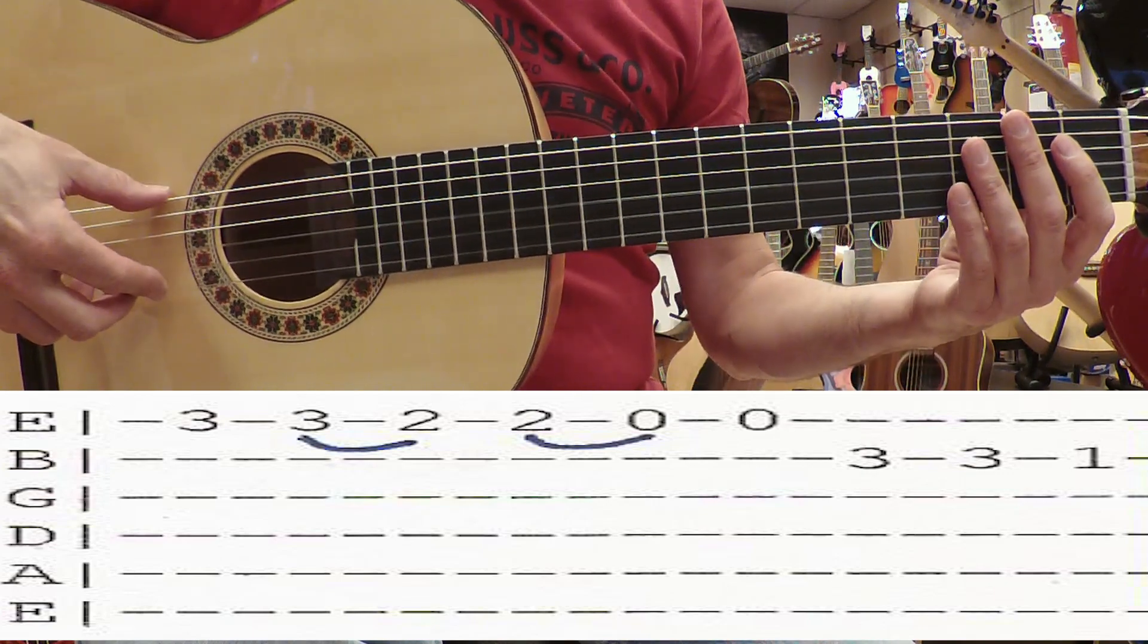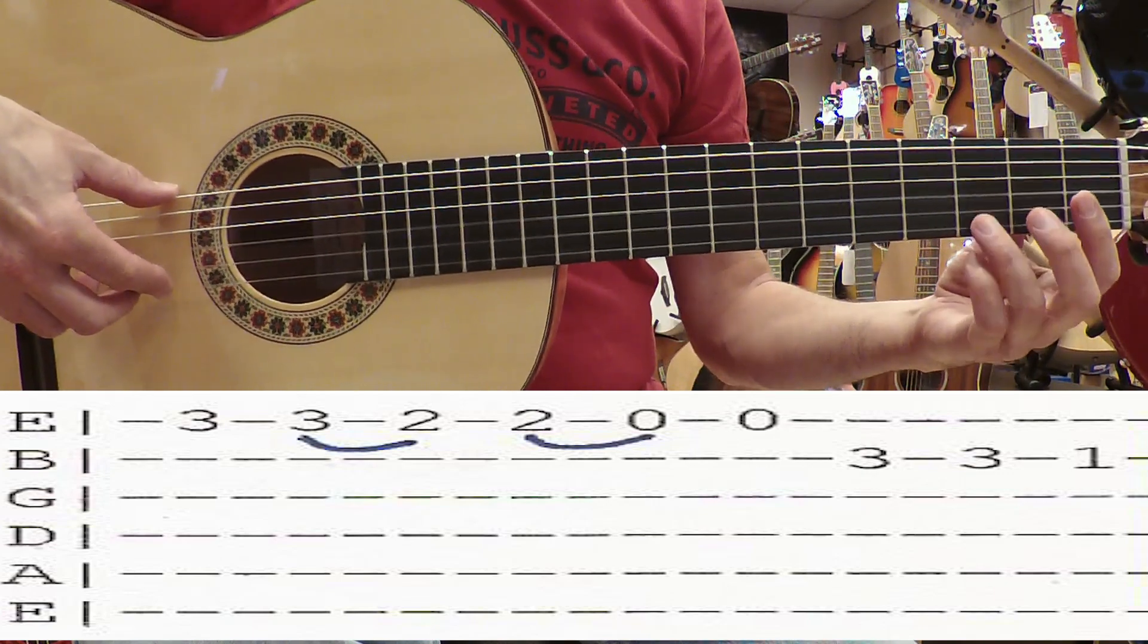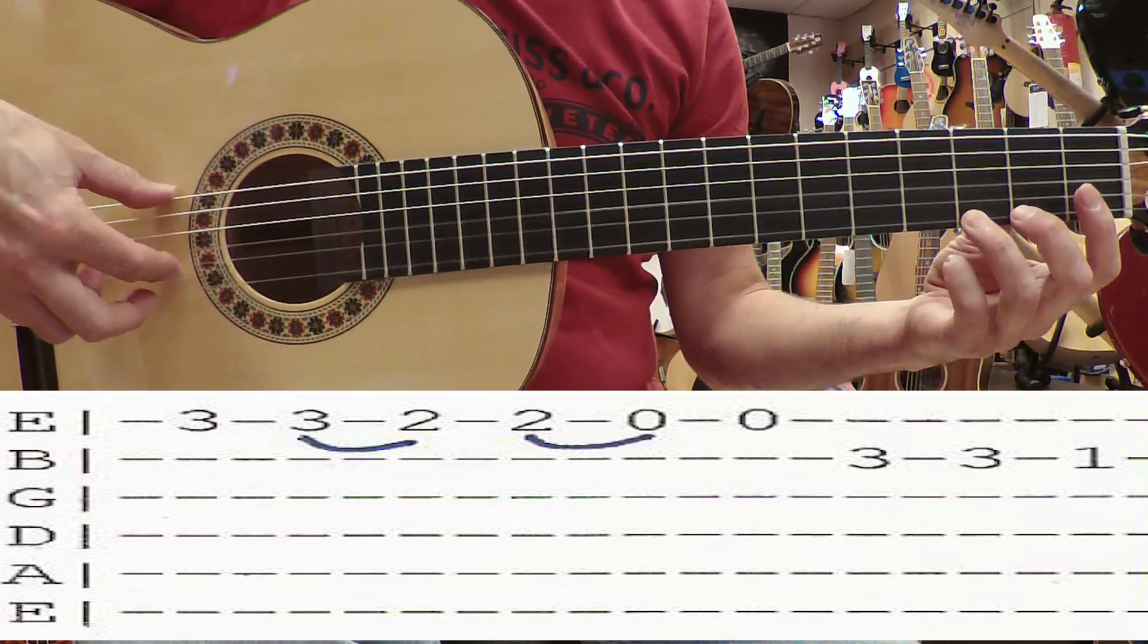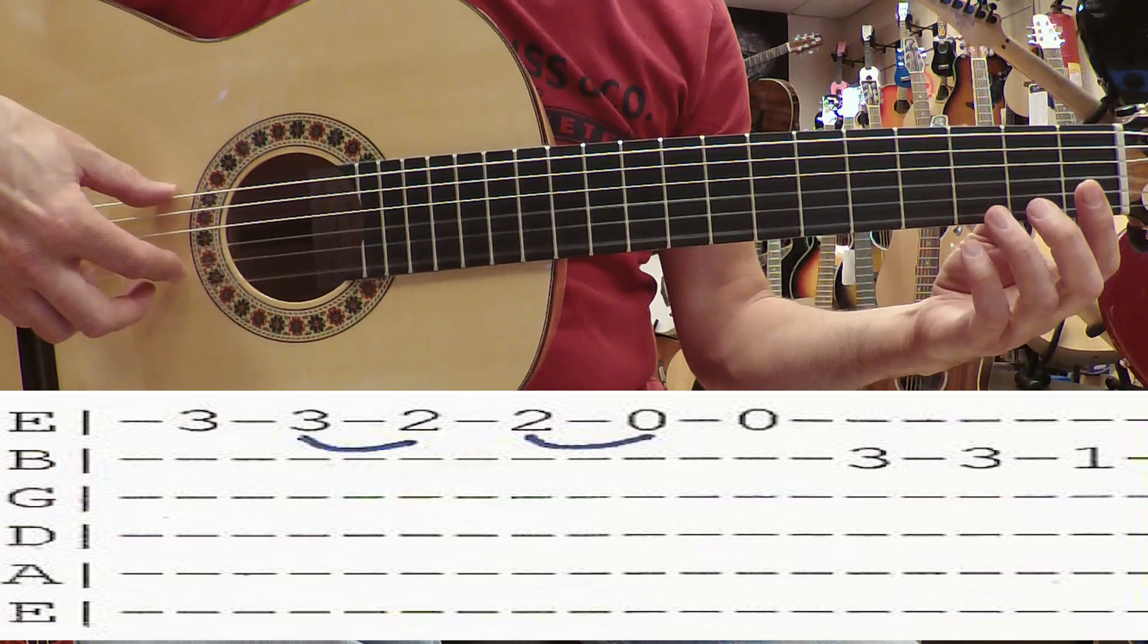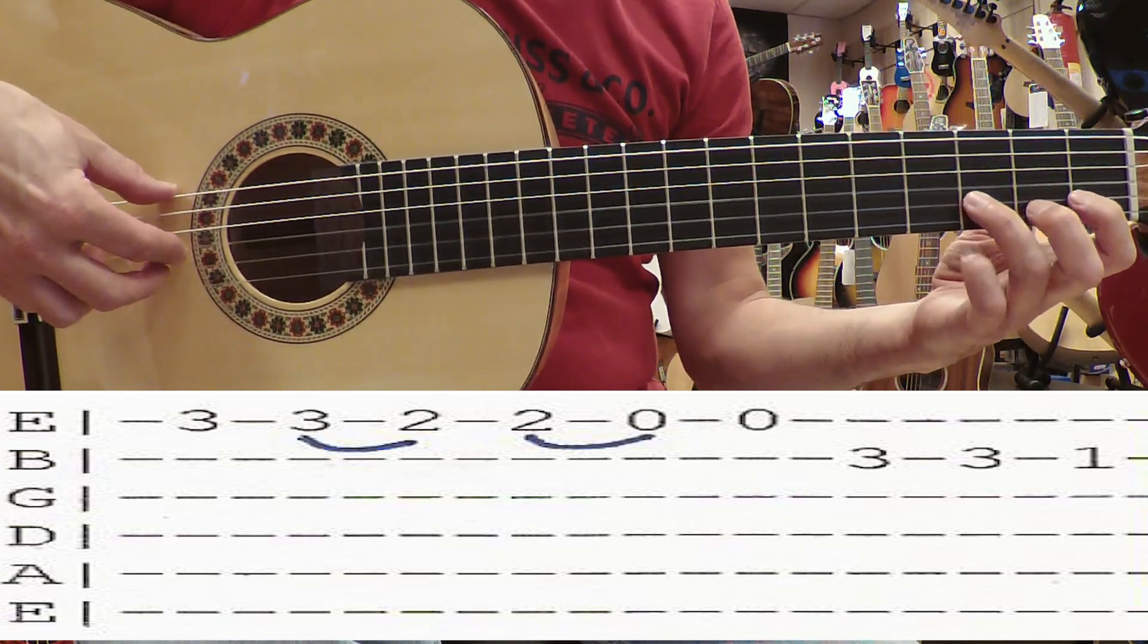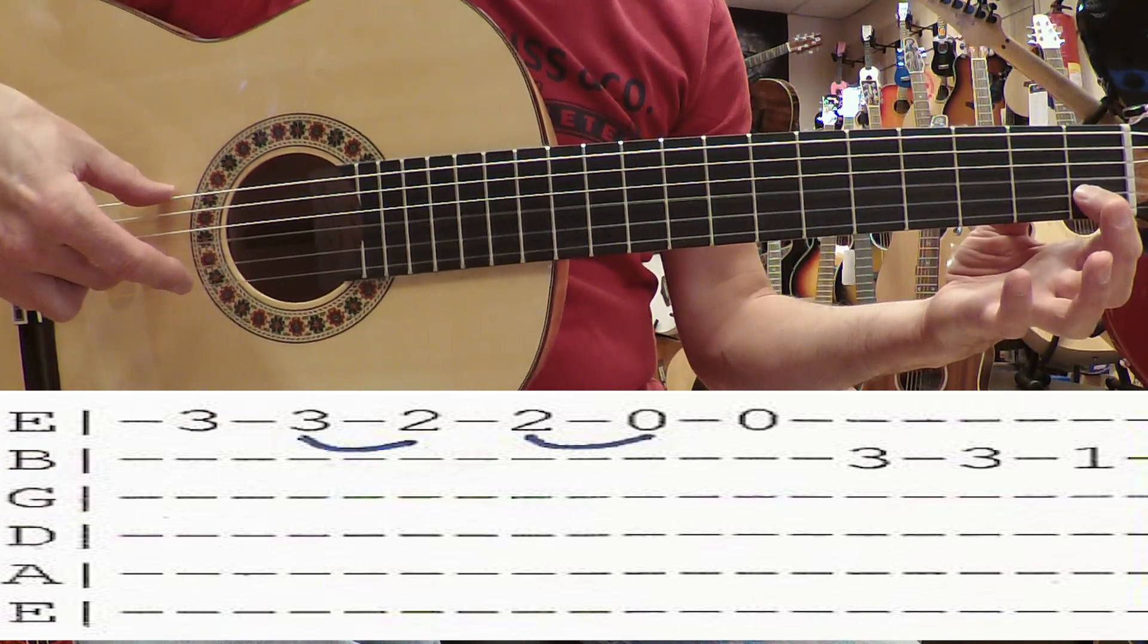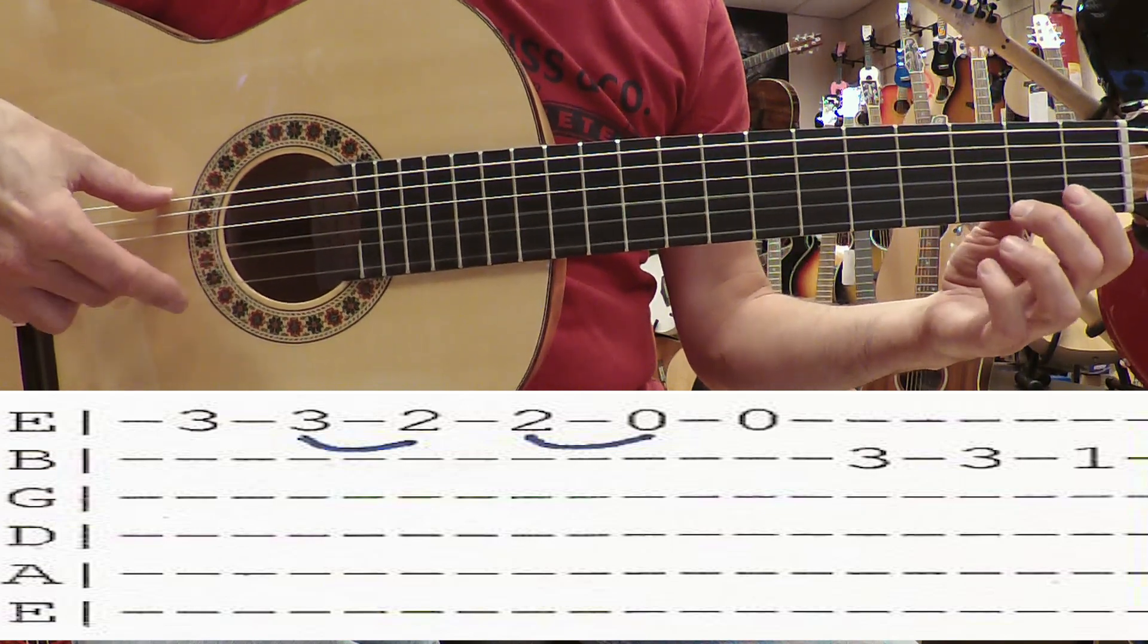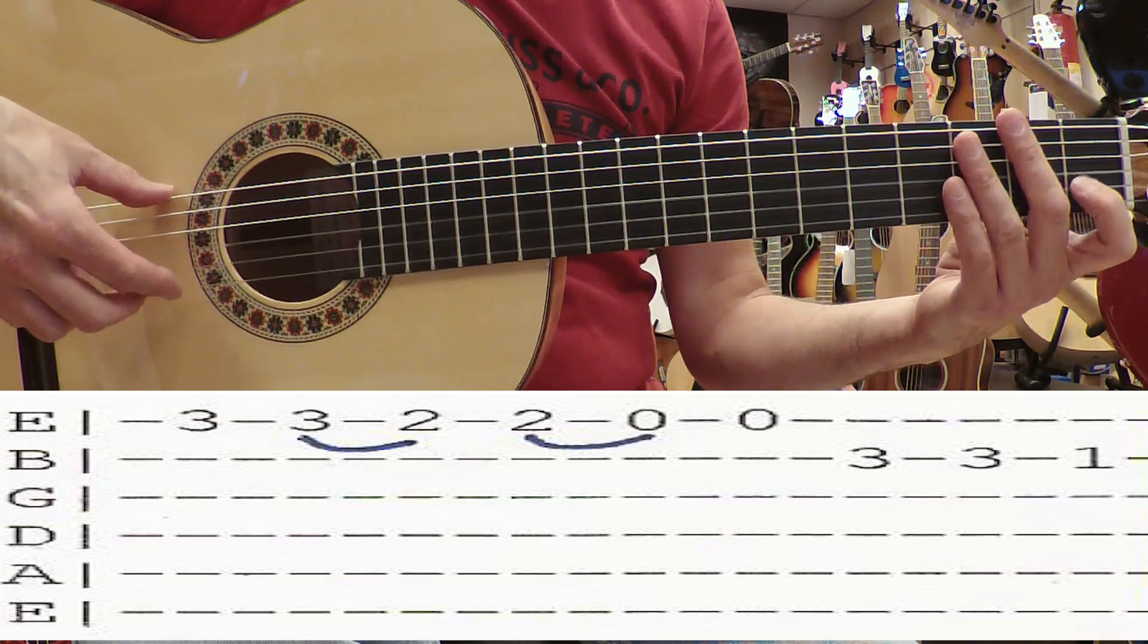Primer compás. El dedo 3 le vamos a poner en el traste 3 y ahí tenemos esa posición. Y tocamos. Cada dedo en su traste. Otra vez. Un poquito más de velocidad.